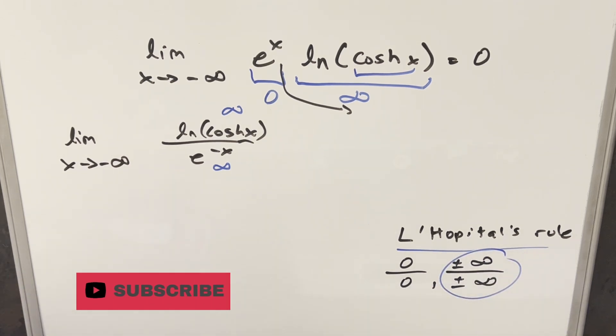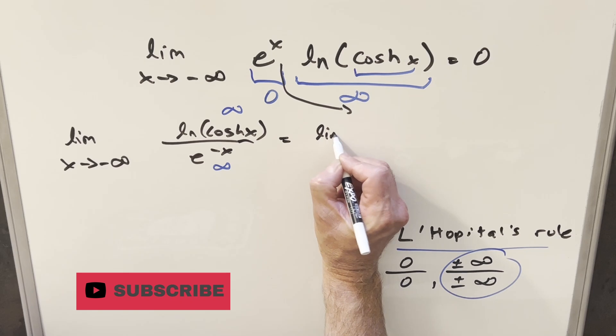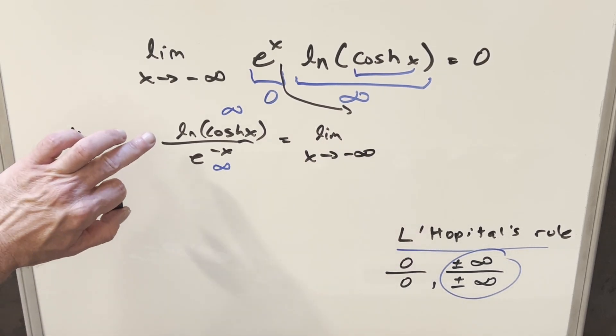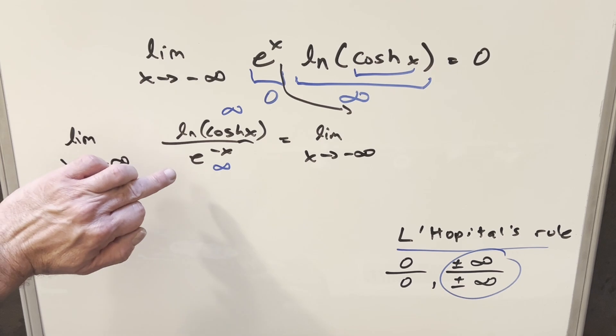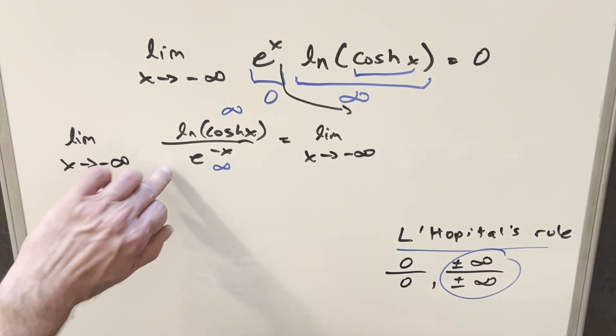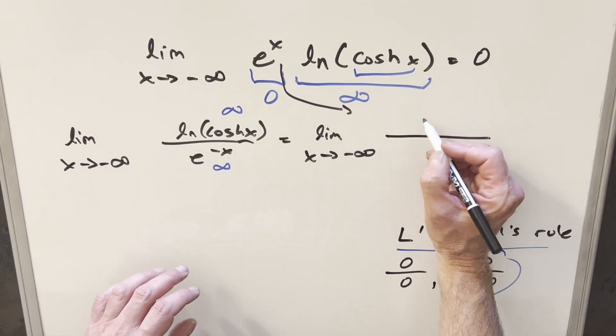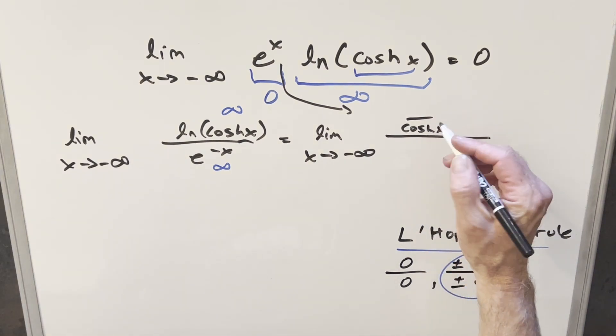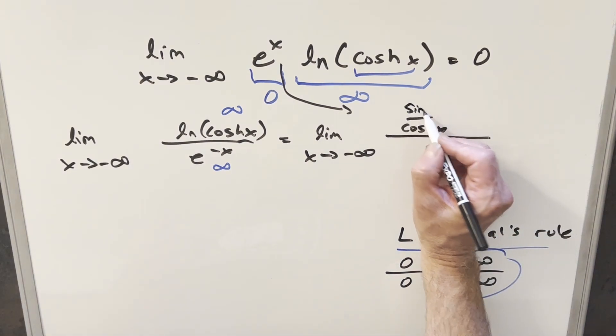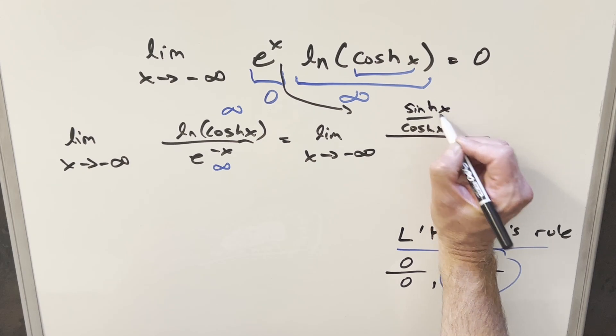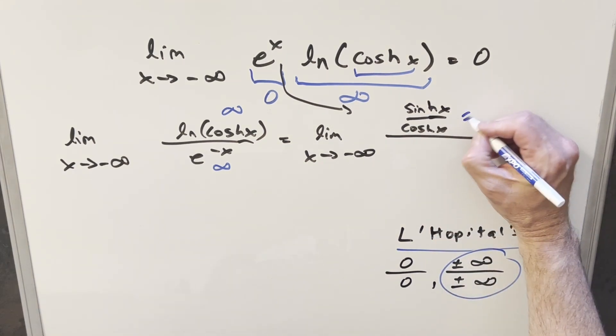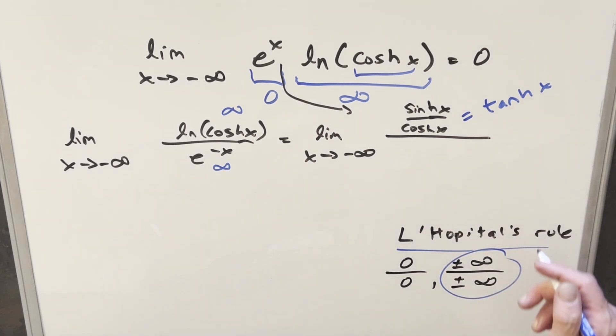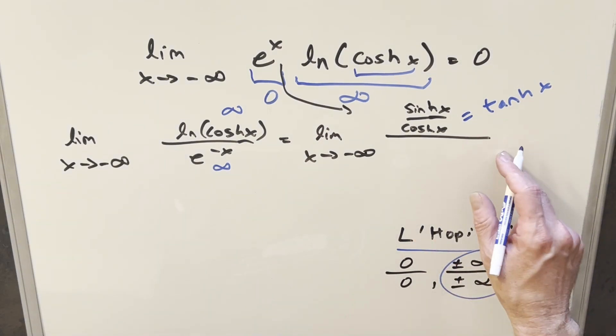And so what this allows us to do is take the same limit, right? So we're still going x approaching minus infinity. But then it allows me to take the derivative of the numerator over the derivative of the denominator. So first for the numerator, taking the derivative, we're going to have one over cosh x. But then we need chain rule, taking the derivative of cosh x, that's going to give sinh x. And of course we could just look at this as tanh of x, or we could write it out like we did earlier in terms of the exponential, which I think we'll do in a minute.